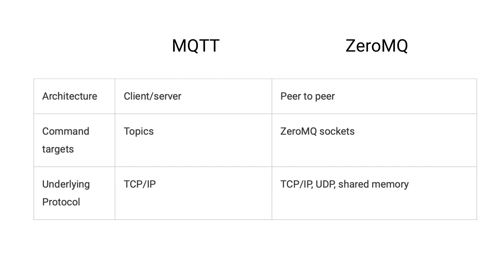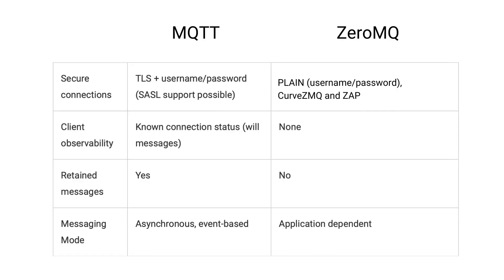Consequently, ZeroMQ is not IoT ready while MQTT offers plug-and-play capabilities for IoT. Both technologies use TCP/IP as their underlying protocol, but ZeroMQ also uses UDP and shared memory. Security is a huge characteristic to consider. MQTT uses TLS plus username/password while ZeroMQ uses PLAIN, ZMQ, and ZAP.